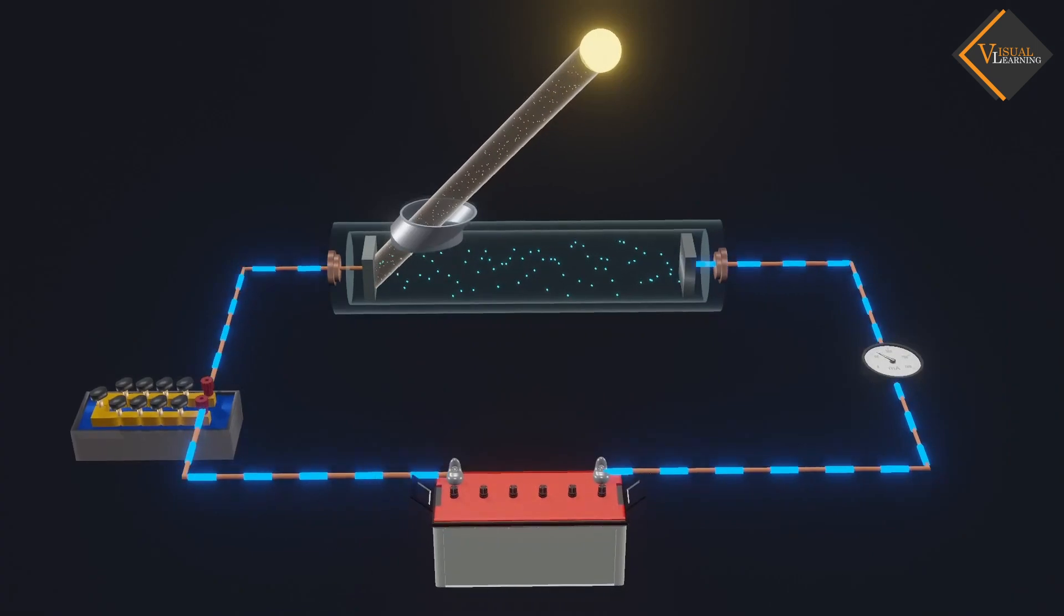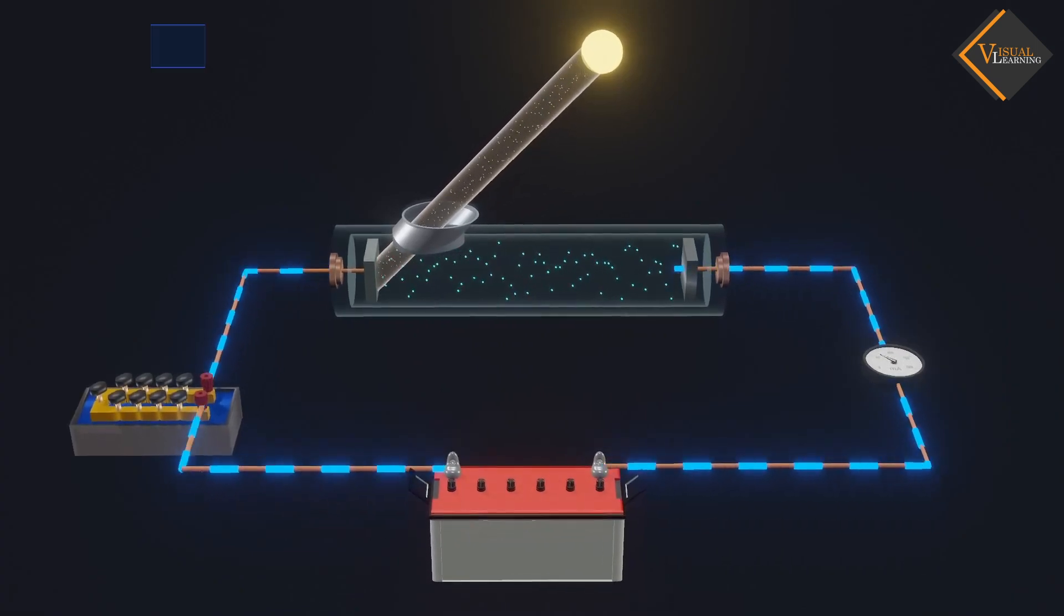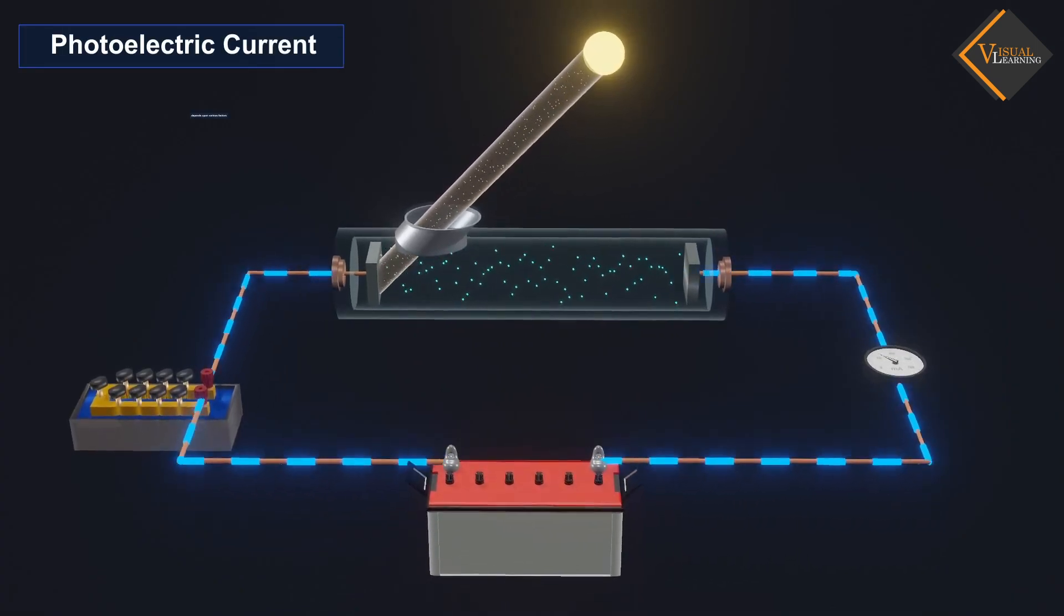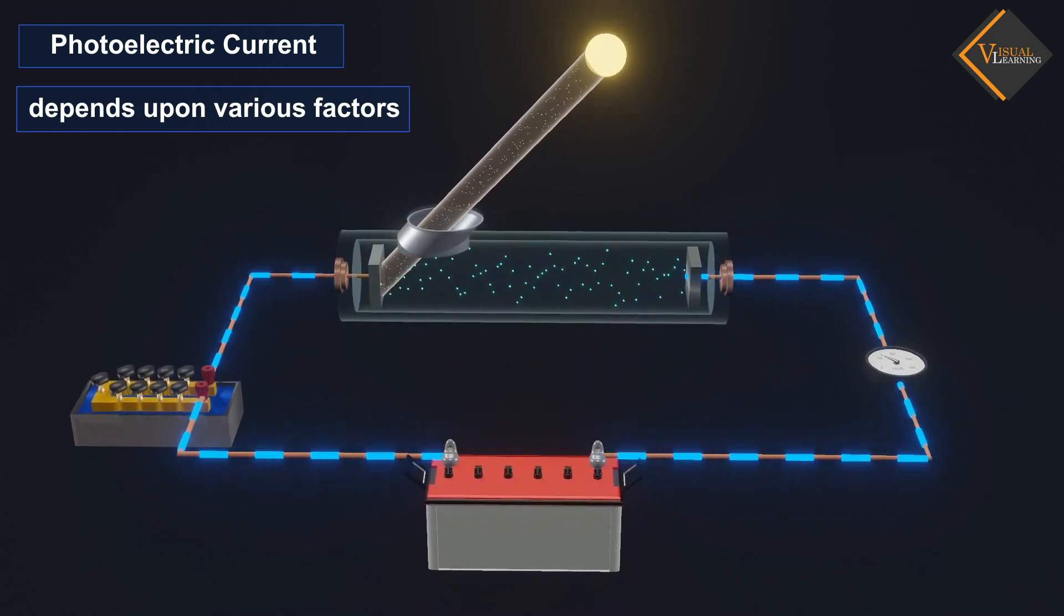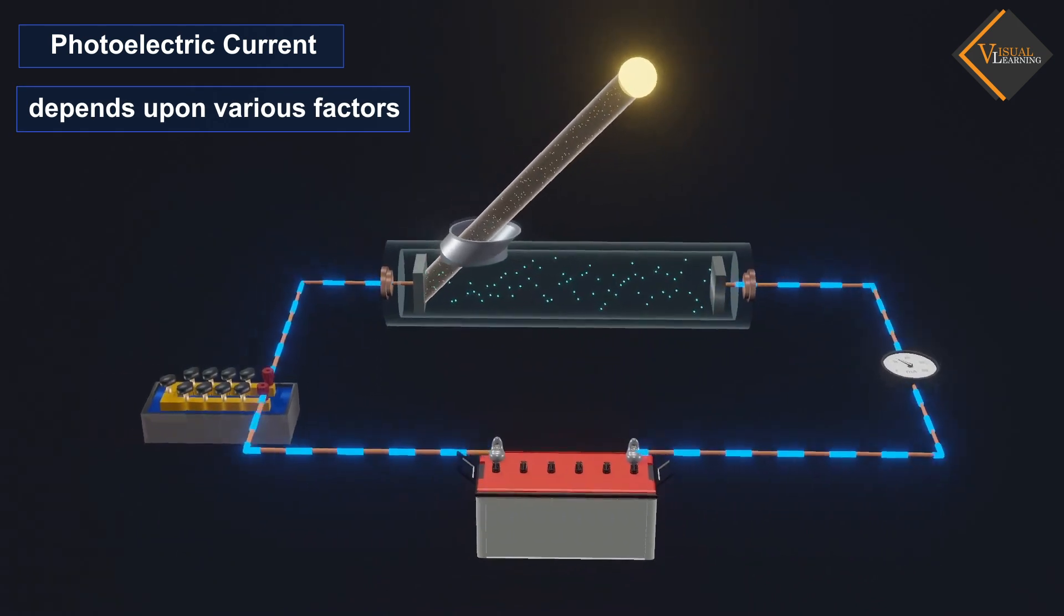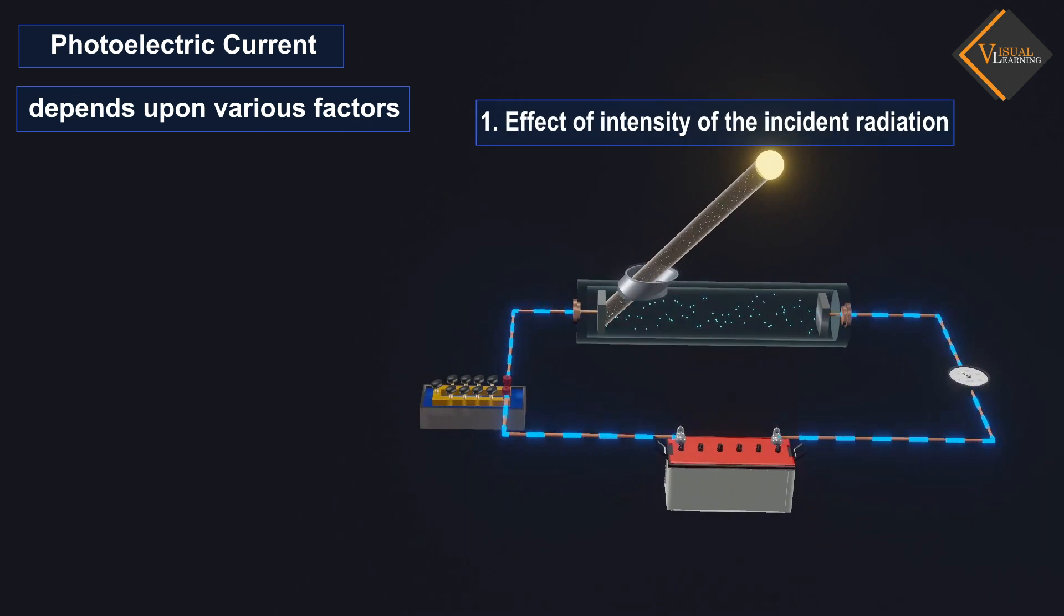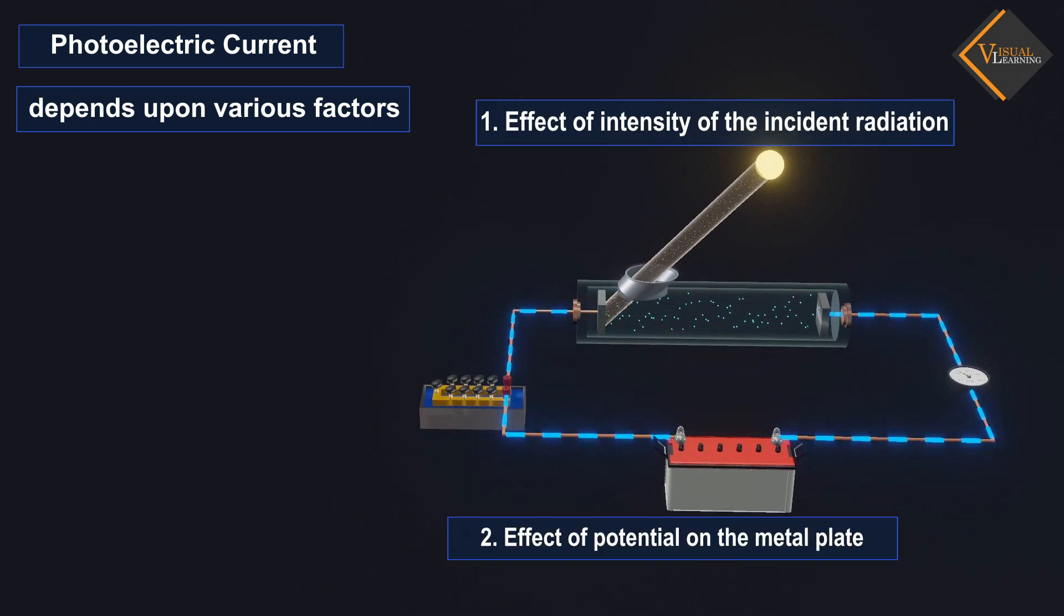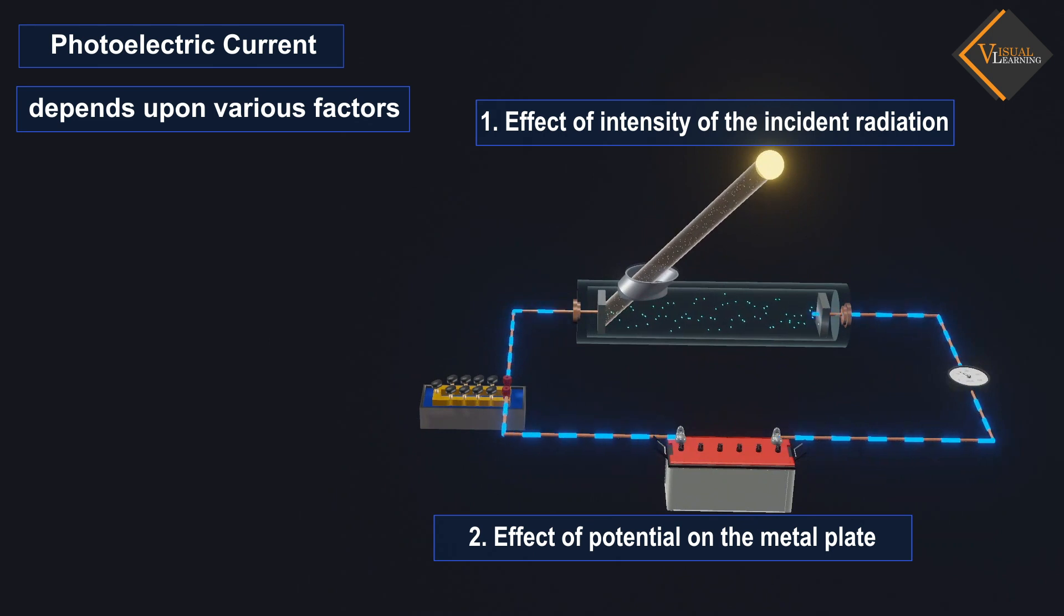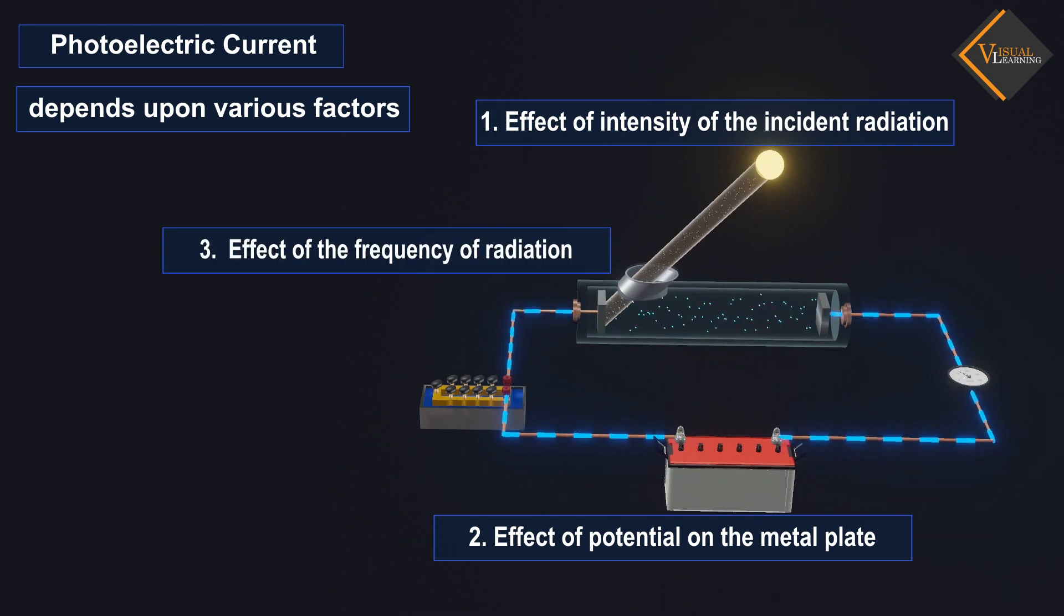In this experimental study, it was found that the photoelectric current varies depending on certain factors. These factors are: effect of intensity of the incident radiation, effect of potential on the metal plate, and effect of the frequency of radiation.